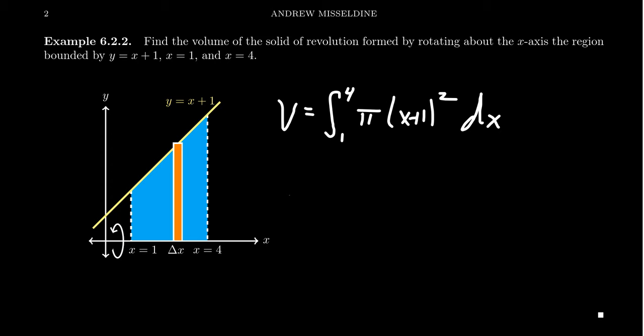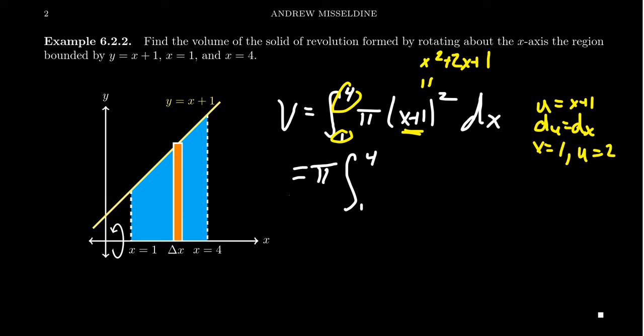We get pi, which is a constant, so we take it out of the integral. To integrate x plus 1 squared, we could try u-substitution or just foil it out. Foiling gives x squared plus 2x plus 1. For u-substitution, take u equals x plus 1, so du equals dx. When x is 1, u equals 2, and when x equals 4, u equals 5. I'm going to take the foil approach, so we integrate x squared plus 2x plus 1 dx.